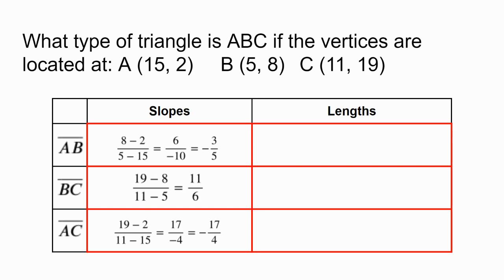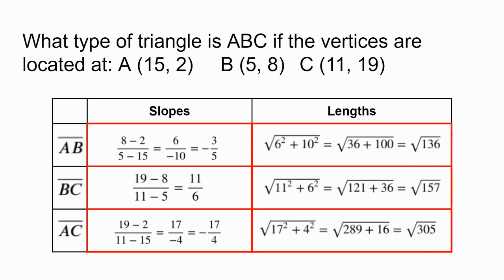We can also use the Pythagorean theorem or distance formula to find the lengths of each side. Here, we see the calculations for all three sides. Notice that we can use some of the calculations we already used to find slope in our distance calculations. For example, the slope of AC was negative 17 fourths. And to find the length of AC, we find the sum of the squares of negative 17 and of 4. So now we have the slopes of each side and the lengths of each side. Do you think you know what type of triangle it is now?